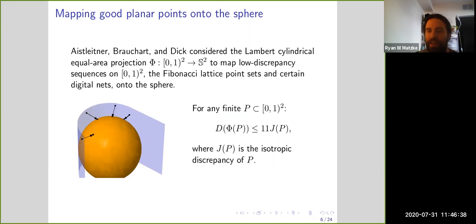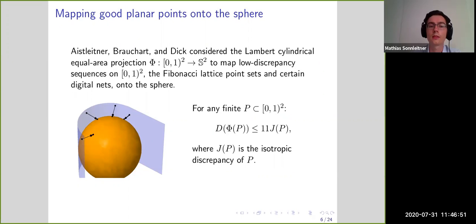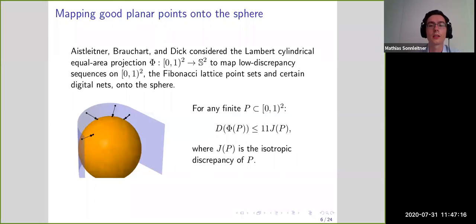Q: Do you have explicit examples of lattices with σ_L less than 1/2? A: Yes — if you scale down the integer lattice sufficiently so it has many points inside the unit cube, at a certain point this condition holds. It is not a hard restriction: if you have many points that are not too badly distributed, you have this.